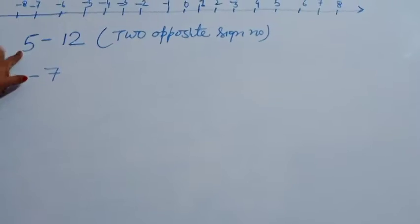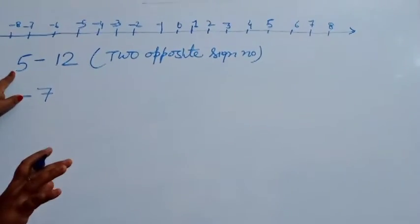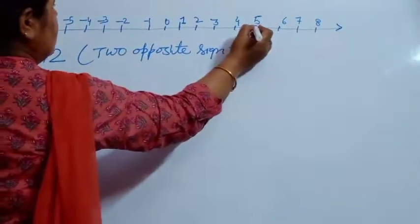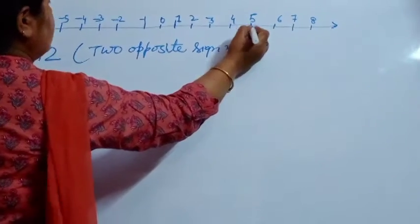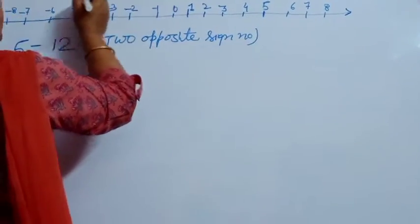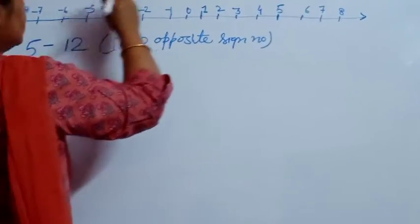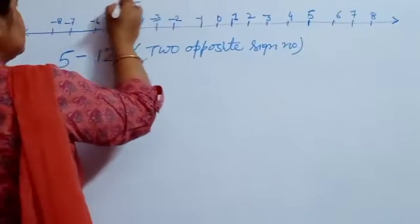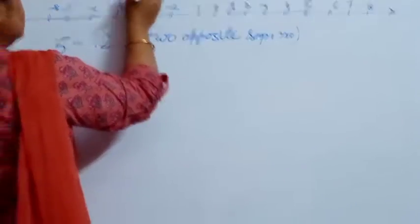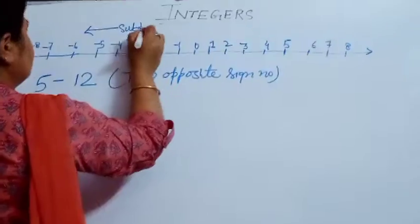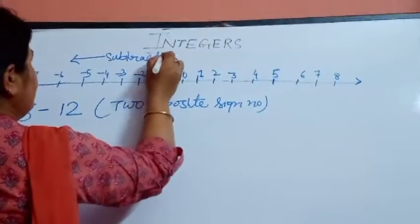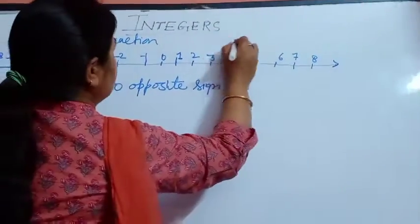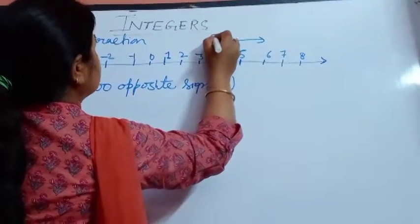Now we will do this question with the help of the number line. Just stand on 5. For subtraction, we will go in the left direction, and for addition, we will go in the right forward direction.